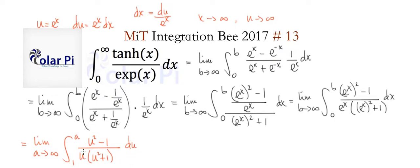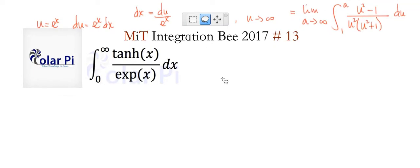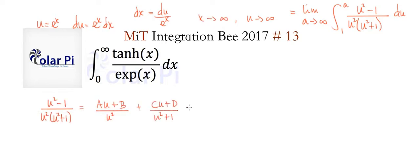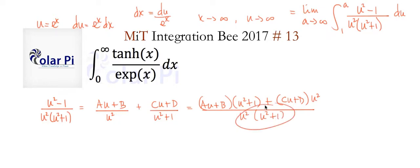The bulk of the work now is partial fraction decomposition. We start with this integrand — since we have a quadratic times a quadratic in the denominator, partial fraction decomposition requires assuming linear numerators, which I've done here. Getting common denominators gives us the denominator shown, and comparing numerators on the far left and far right, we only require that the numerators be equal.